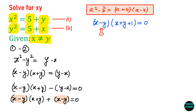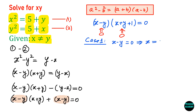This means either x minus y equals 0, or x plus y plus 1 equals 0. In case 1, if x minus y is 0, that means x equals y. But in the question it is given that x is not equal to y, so this case is rejected.